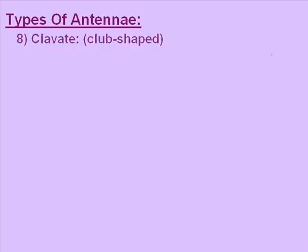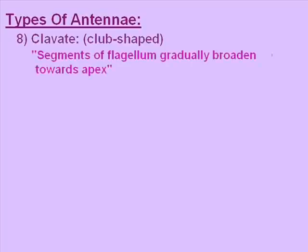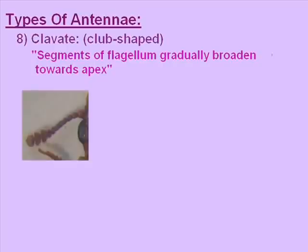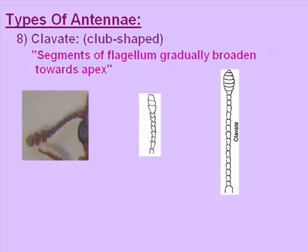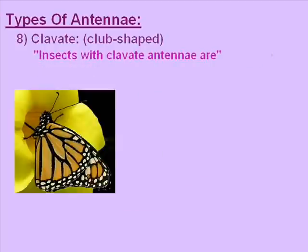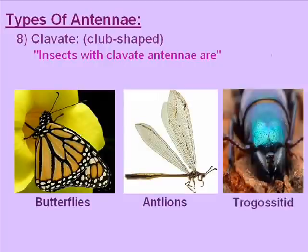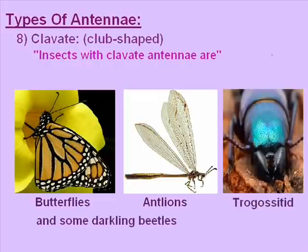The eighth type of antenna is clavate, meaning club-shaped. The segments of the flagellum gradually broaden towards the apex. The pictures show three examples of clavate antennae. Insects with clavate antennae are butterflies, antlions, trogossitids, and some darkling beetles.